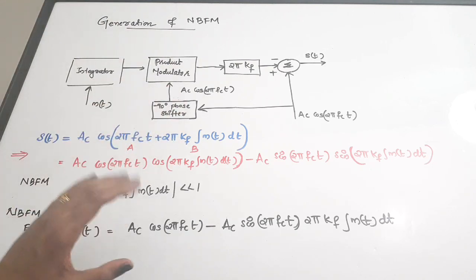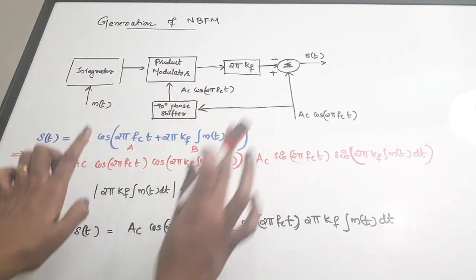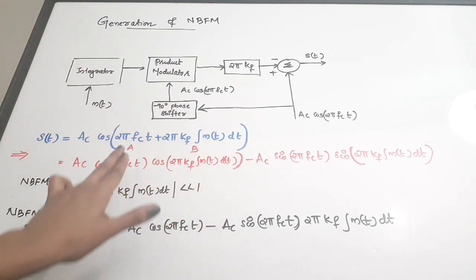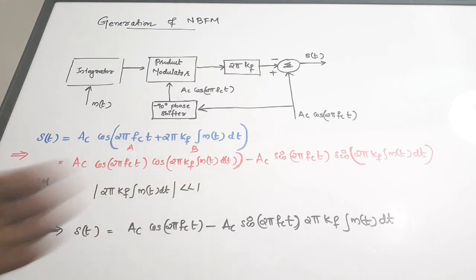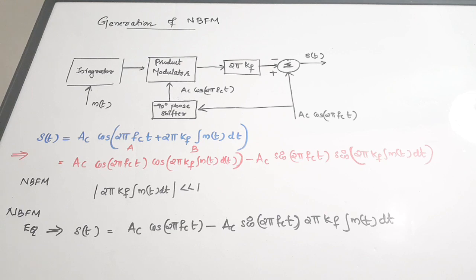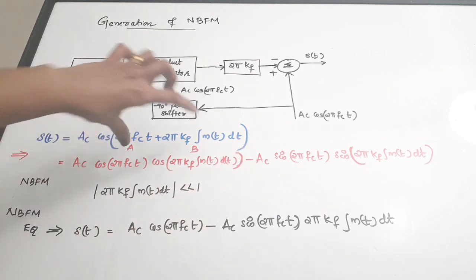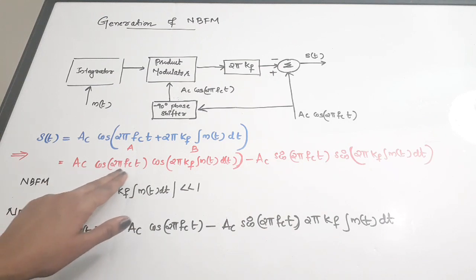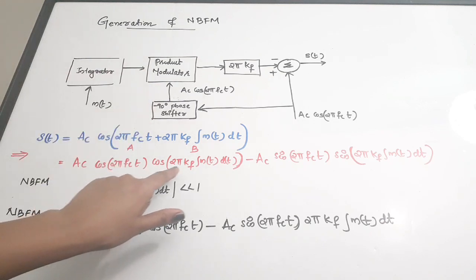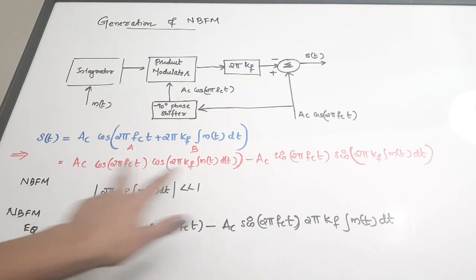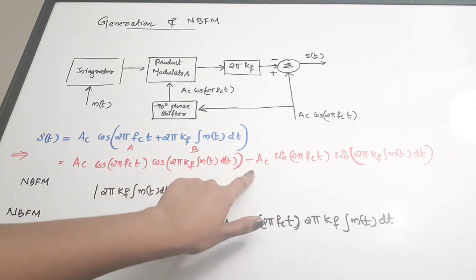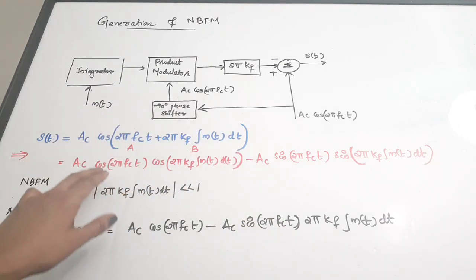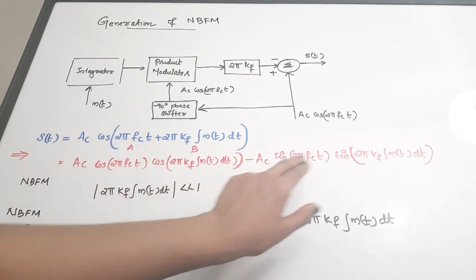If you look into this equation, there is a cos term with two terms added together. If we consider those two terms as A and B, we can apply the expansion cos(A+B) = cos A cos B − sin A sin B. Expanding the equation gives: ac cos(2π fc t) · cos(2π kf ∫m(t)dt) − ac sin(2π fc t) · sin(2π kf ∫m(t)dt), where ac is common to both terms.